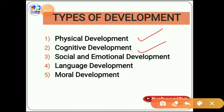The third type is social and emotional development. Social development involves children developing social skills like sharing, cooperation, and patience in their interaction with peers and others. Social development is basically the ability to behave in accordance with social expectations, while emotional development is the ability to control and manage one's emotions.